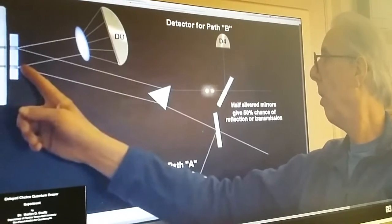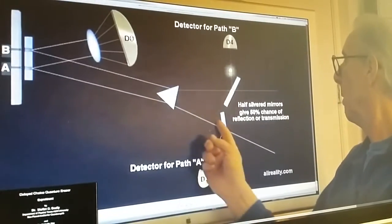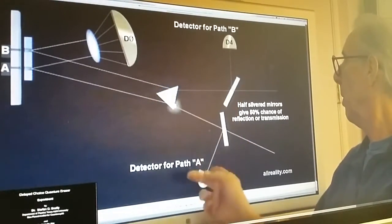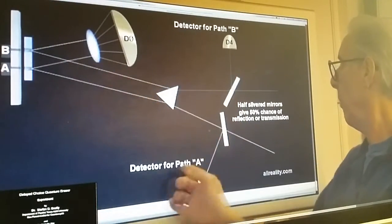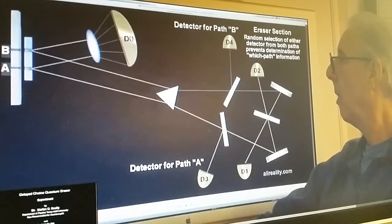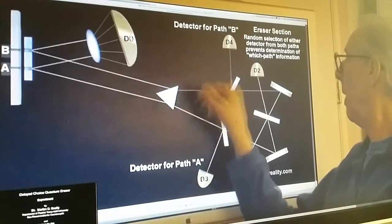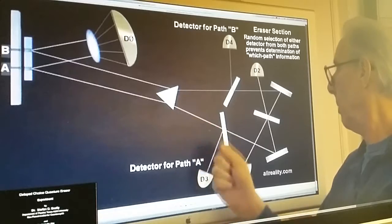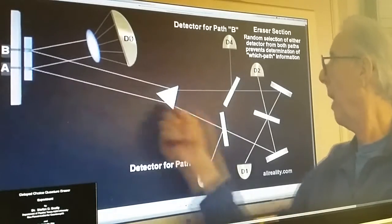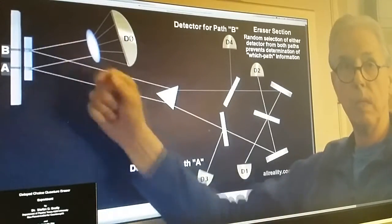The same thing for the other path. So you're detecting which path information because you know if it hits D3, it came from A. If it hits D4, it came from B.